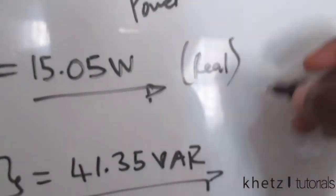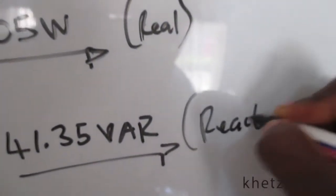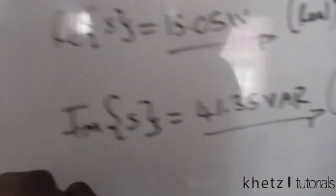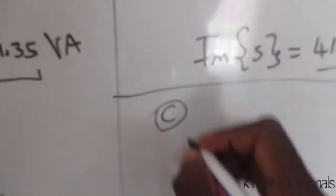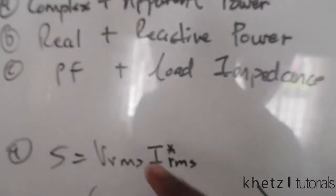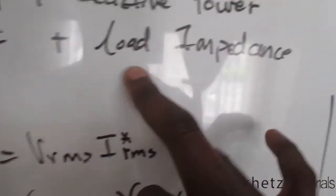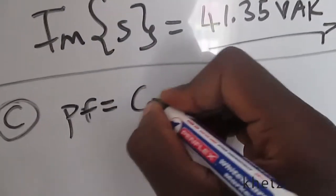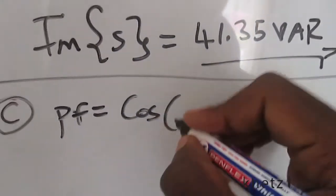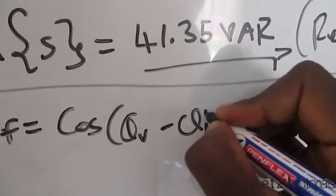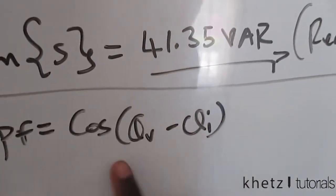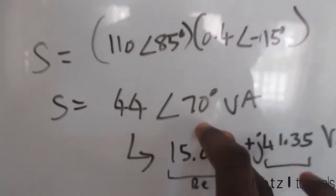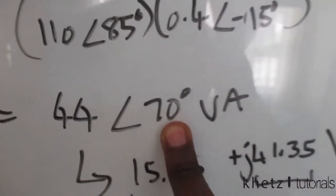Moving on to the last section of this question, we are asked to find the power factor as well as the load impedance. So the power factor is given - the formula for one of the formulas for power factor is this, and this angle or this difference of angles is the same angle which is carried by the complex power. So you can just simply take this angle.